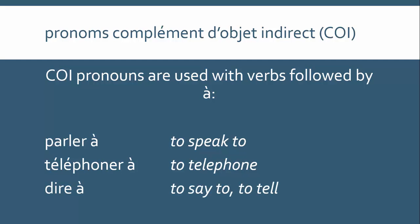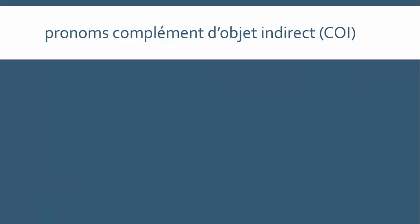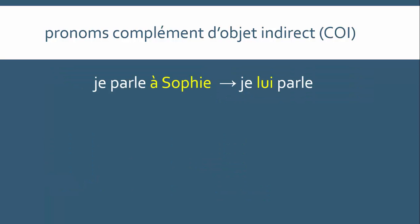And finally, 'dire à' means 'to say to' or 'to tell.' So if I were to say 'je parle à Sophie' — I am speaking to Sophie — but then I didn't want to keep repeating her name, I could say 'je lui parle.' Literally, 'I to her speak,' but avoid the direct translation: it simply means 'I am speaking to her.'